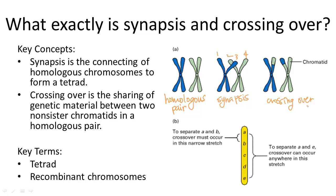Interestingly, not all genes are equally likely to cross over to another chromosome. Depending on the distance between two genes on a chromosome, there will be a different probability of these genes separating. This makes more sense when you look at a simple diagram like this one.